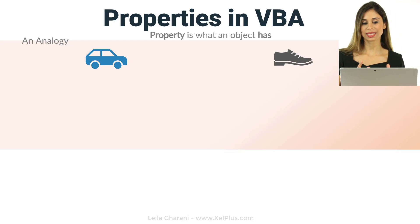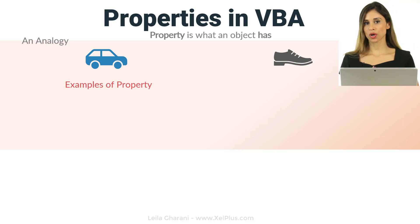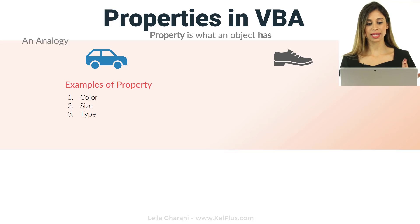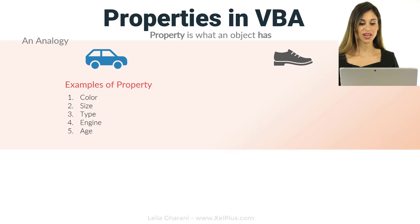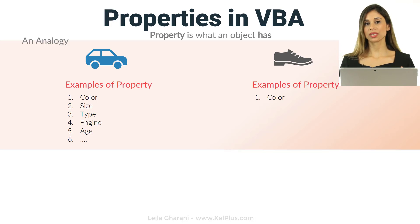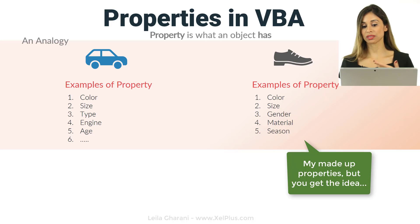Let's take a look at an analogy first. You have two real-life objects: a car and a shoe. Cars have different properties to shoes. We have the color, size, type, engine, and age of the car. For the shoe, we have some things in common like color and size, and then things like gender, material, and season.